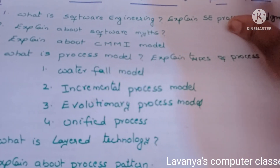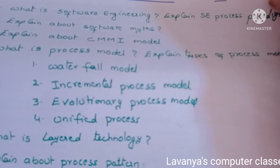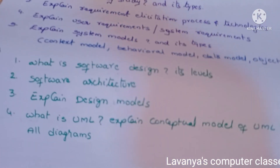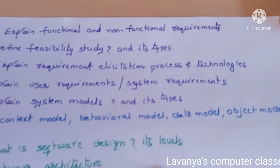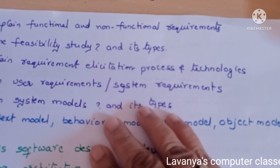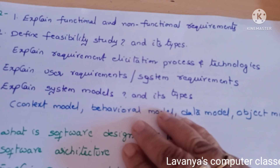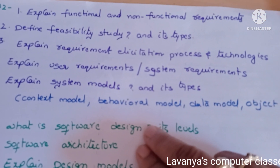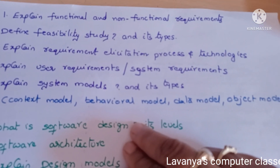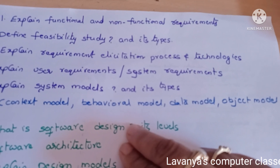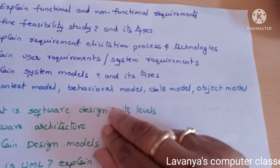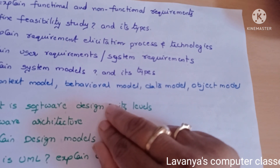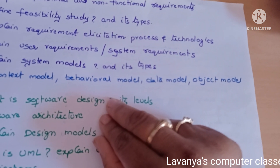Unit two: The important questions are explain functional and non-functional requirements. Next is define feasibility study and its types — very important question. Next is explain the requirement elicitation process and its technologies — requirement elicitation is a very important question.